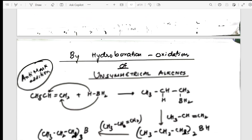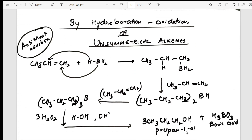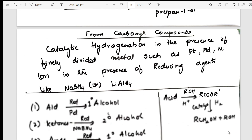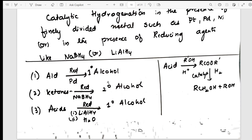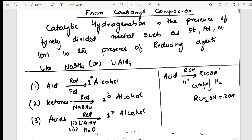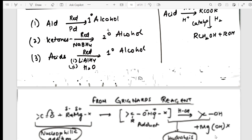The second preparation method is the hydroboration-oxidation reaction. I have shown symmetrical alkenes and the products obtained. Then from carbonyl compounds, I cover the preparation of primary, secondary and tertiary alcohols, with their respective reagents also mentioned.